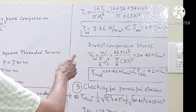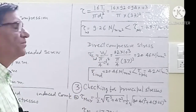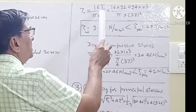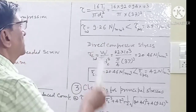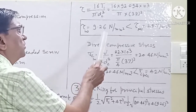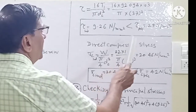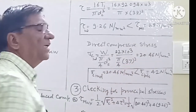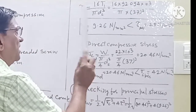From the relation τ_induced equal to 16·T1 upon π·DC³, the induced shear stress comes out to be 9.26 N/mm². This value is less than the permissible shear stress of 28 N/mm². Hence, the screw is safe in shear.